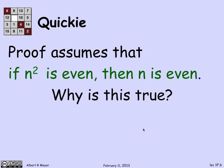Now, I did assume something that is kind of obvious — namely that if n² is even, then n is even. Why is this true? Well, you might think about it for a moment. There's a simple way to see it, and it's a proof by contradiction. We're going to use a fact you can verify easily by doing a little arithmetic: the product of two odd numbers is odd. Let's assume that.